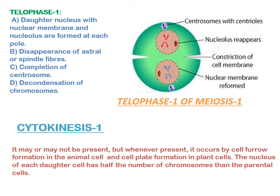Cytokinesis 1 is the division of the cytoplasm in meiosis 1. It may or may not be present, but whenever present, it occurs by cell furrow formation in animal cells and cell plate formation in plant cells. The nucleus of each daughter cell has half the number of chromosomes compared to the parental cell.